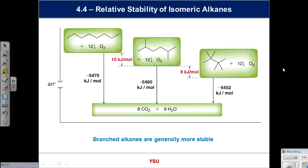The only reaction you really see in this chapter is the combustion of alkanes. Most of you probably drove to school today and did this reaction—you took gasoline, burned it, got energy out, and propelled your vehicle. This chart shows the relative stability of different isomers: they're all isomeric, containing the same number of carbons and hydrogens. When combusted, each gives eight molecules of CO2 and nine molecules of H2O, releasing a certain amount of energy.